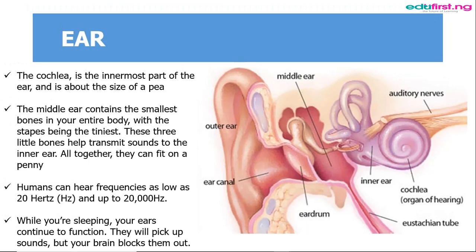The ears contain mechanoreceptors. We have the outer ear, the middle ear, and the inner ear. The ears allow us to hear sound and detect vibrations in particles around us. The inner ear also helps us to maintain balance and regulate sinus pressure.